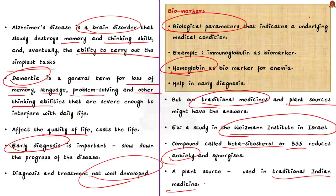These are the important points stressed in this article. In summary, we covered Alzheimer's disease, dementia, biomarkers, and the role of traditional medicine — specifically the compound BSS, which stands for beta-sitosterol.